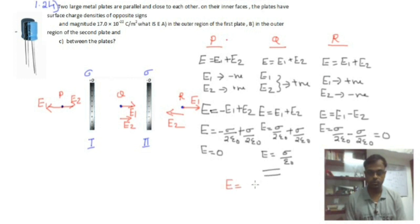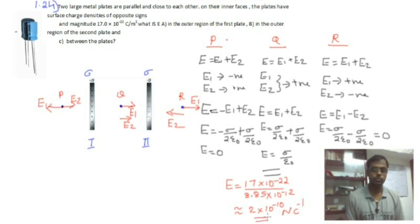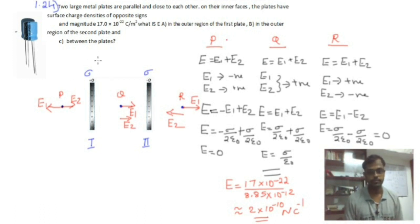Now calculating numerically: E equals sigma divided by epsilon-naught, where sigma is 17 times 10 to the power minus 22, and epsilon-naught is 8.85 times 10 to the power minus 12. This gives approximately 2 times 10 to the power minus 10 newton per coulomb. So for exercise question 1.24, the electric field exists only between the plates, not outside. I hope you understand.